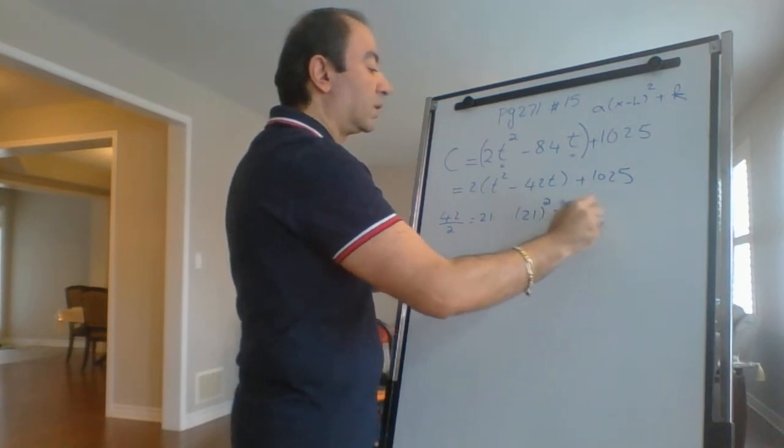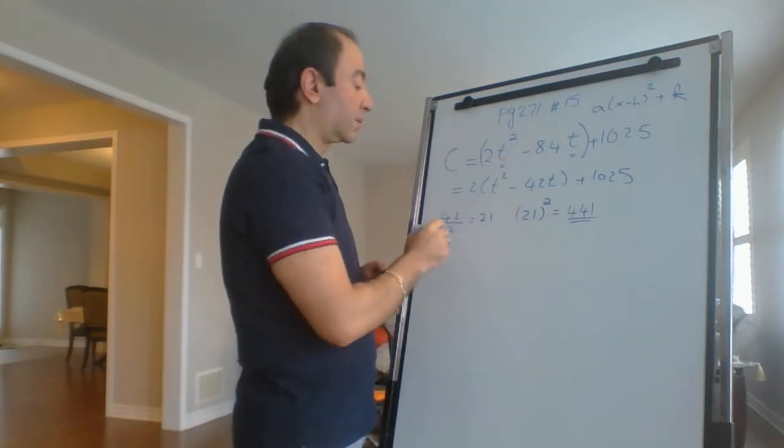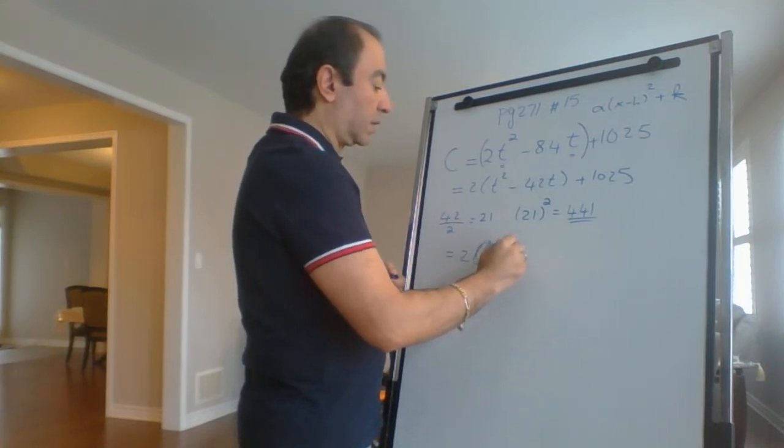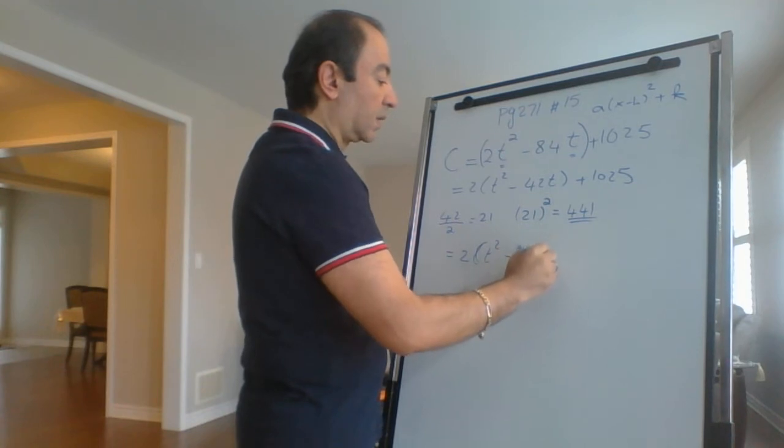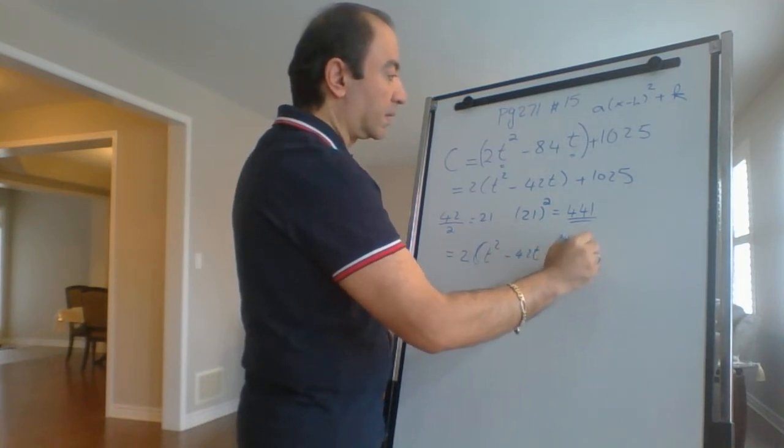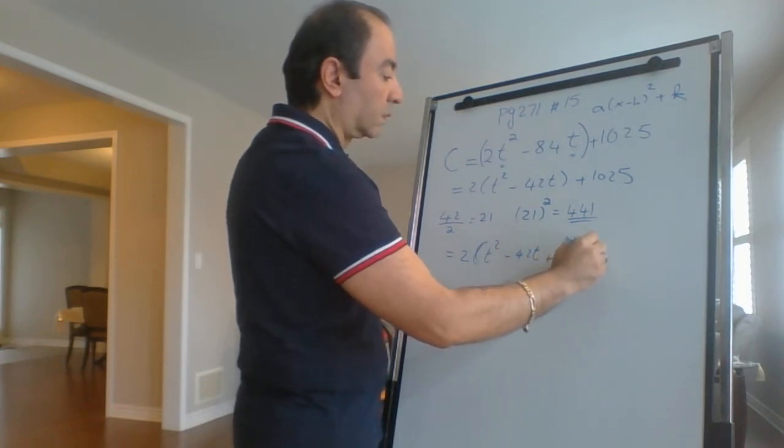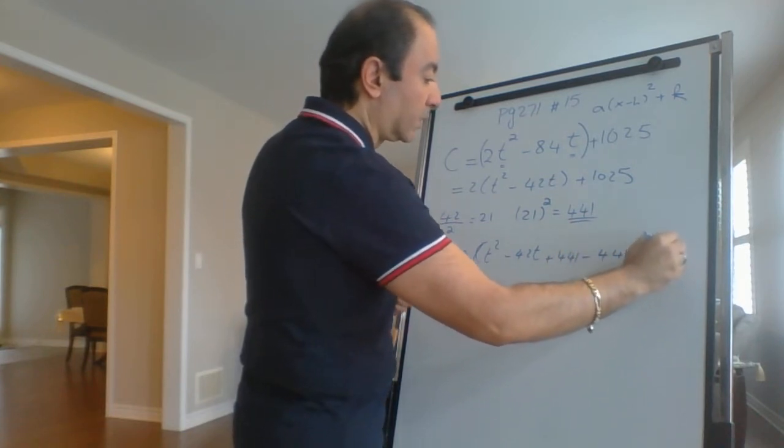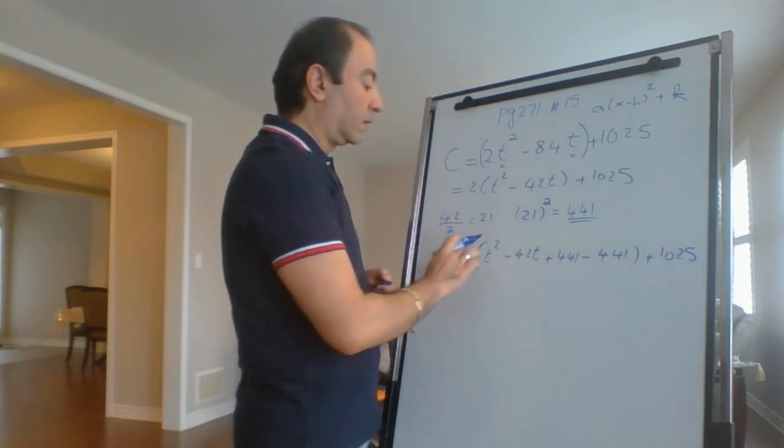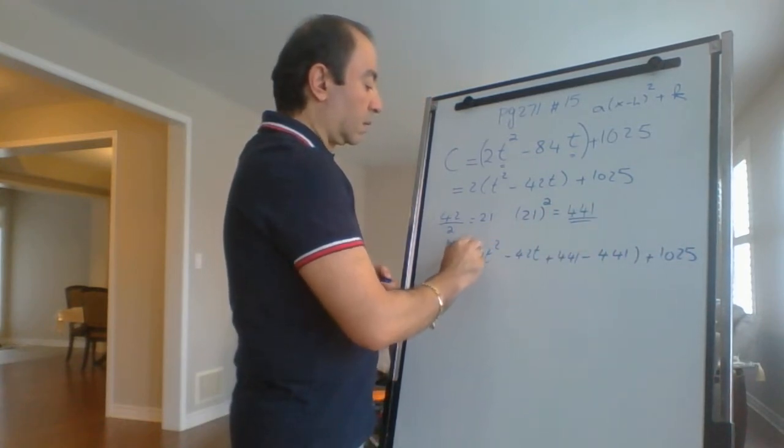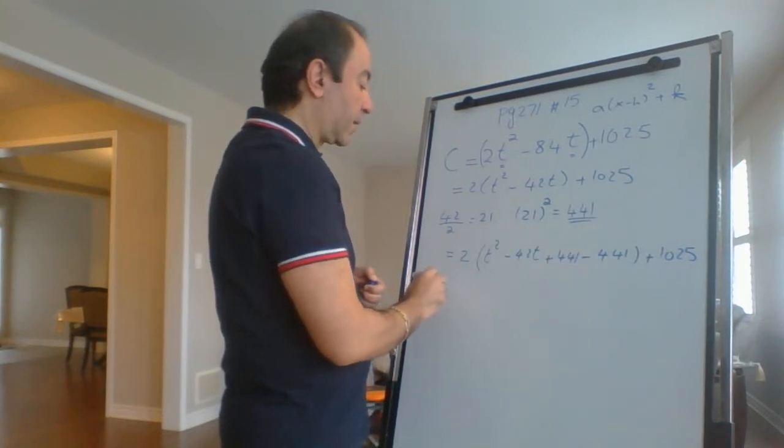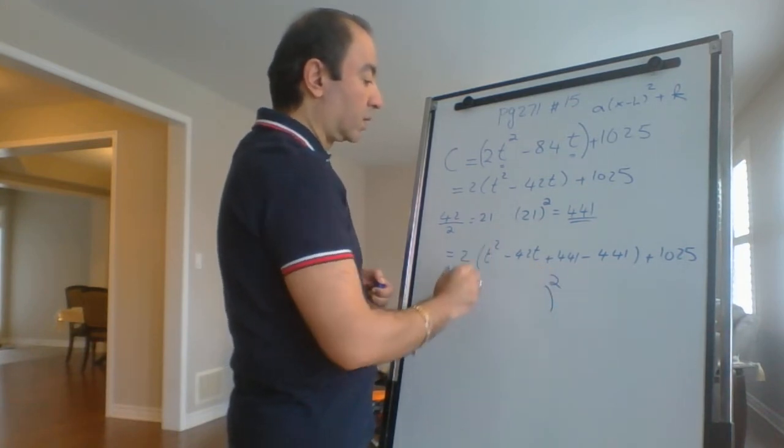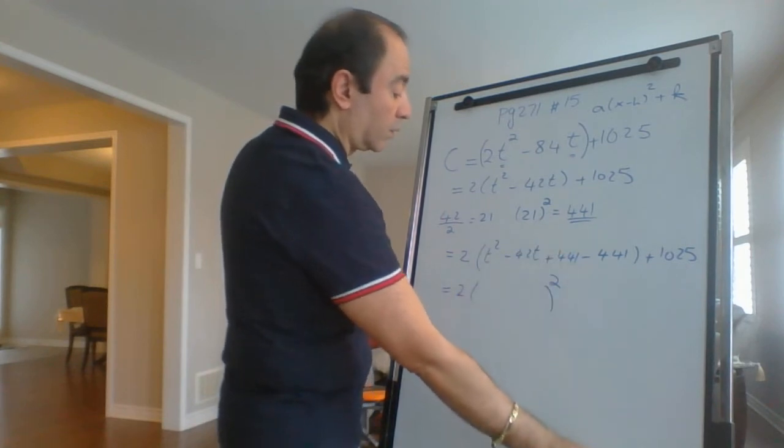What we're going to do with this 441 is add it and subtract it between the brackets: 2(T² - 42T + 441 - 441) + 1025. Now inside the brackets we have a perfect square.